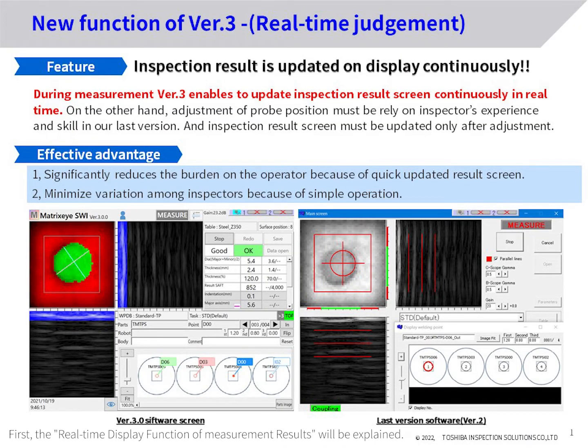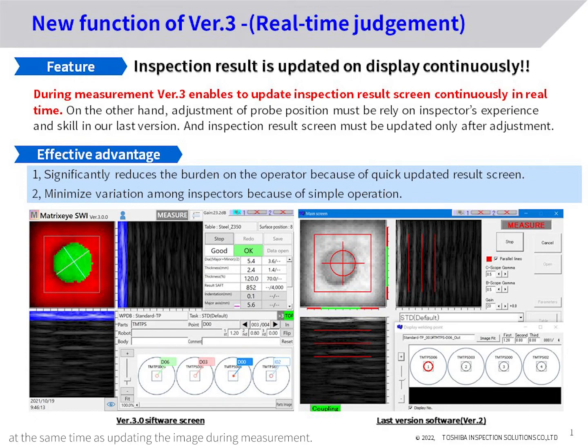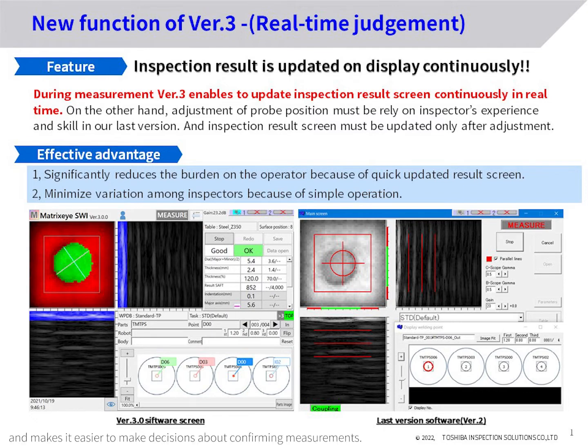First, the real-time display function of measurement results will be explained. The latest software version 3 allows the automatic judgment result to be displayed at the same time as updating the image during measurement. This leads to simpler handling of measurement results and makes it easier to make decisions about confirming measurements.